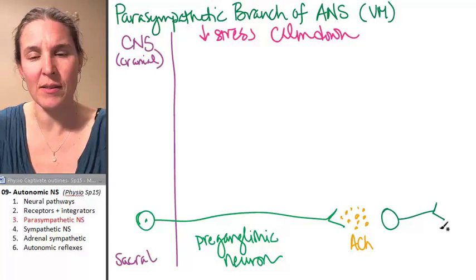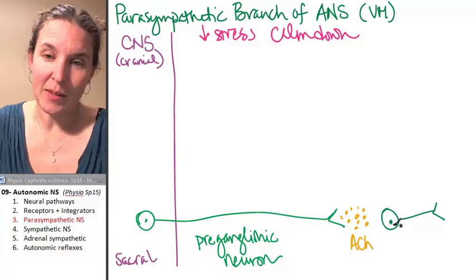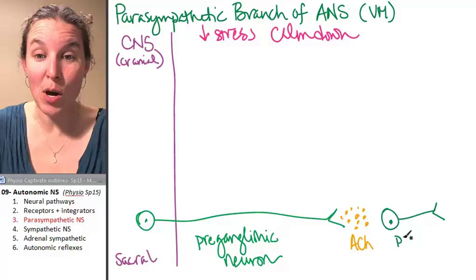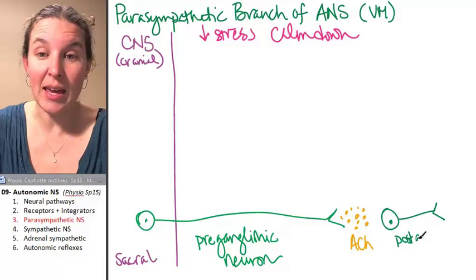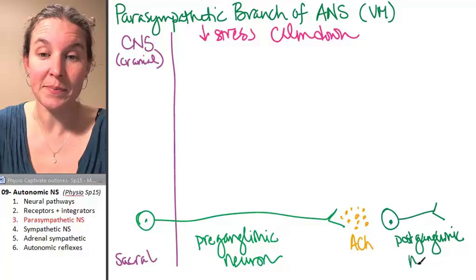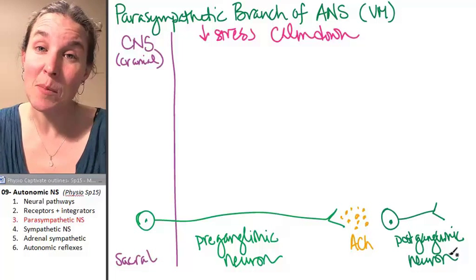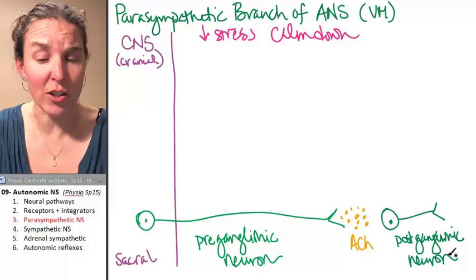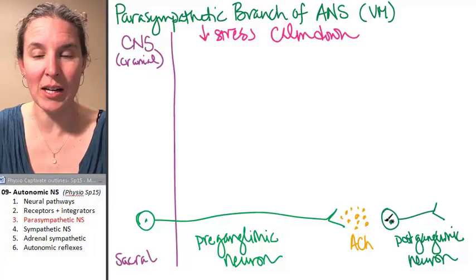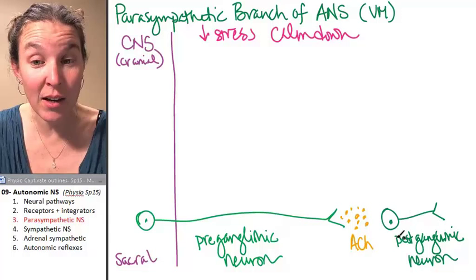depending on how you want to say it, your textbook calls this the postganglionic neuron. The anatomy textbook calls it the ganglionic neuron. I prefer post even though this cell body goes up the ganglion.